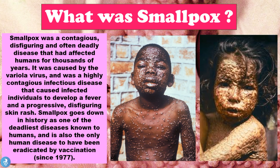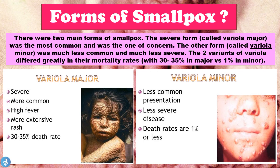So now that we know the basics of smallpox, let's take a closer look at the forms of smallpox. There were two main forms: the more severe form was called the variola major form, which was the most common and was the one of concern, and the other form was called the variola minor form, which was much less common and much less severe. The two variants differed greatly in their mortality rates, with a 30 to 35% chance of death in the variola major form and only a 1% chance of death in the variola minor form.